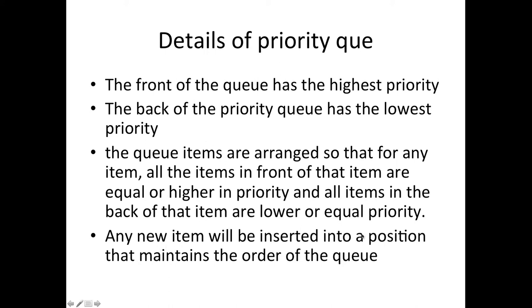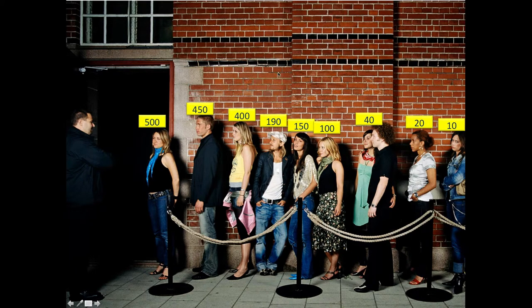Any new item inserted must maintain this order of the queue. So if we insert someone new for $200, you look and see that $200 must go between two people — they need to be more than everyone behind them and less than or equal to everyone in front. So you place them between the $190 and the $140 person.